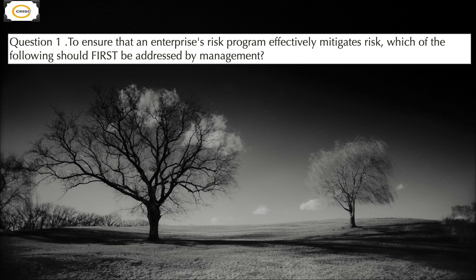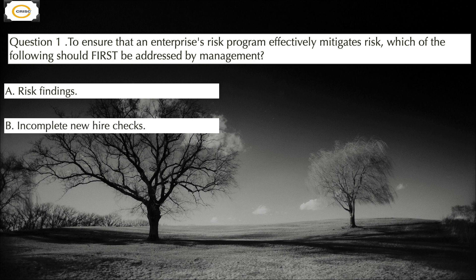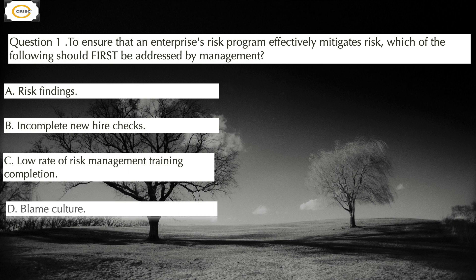Question number one: To ensure that an enterprise risk program effectively mitigates risk, which of the following should first be addressed by management? The options are: risk finding, incomplete new hire checks, low rate of risk management training completion, and blame culture. The correct answer is option D, that is blame culture.